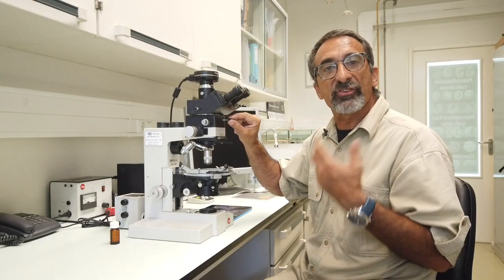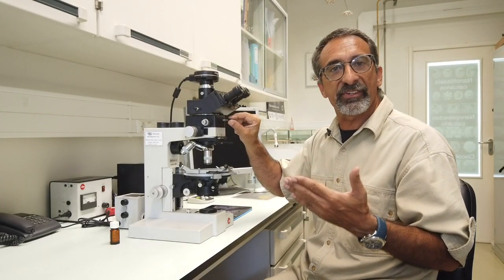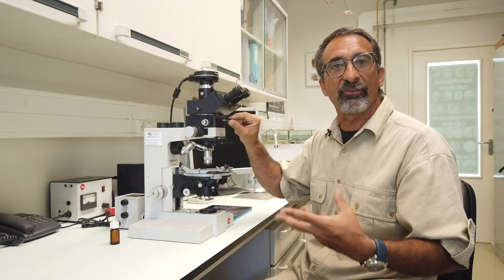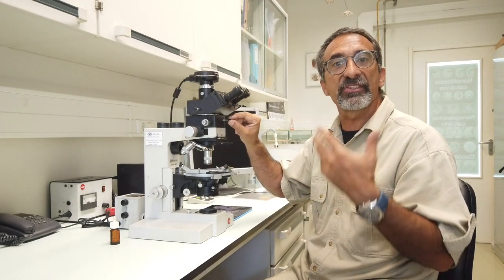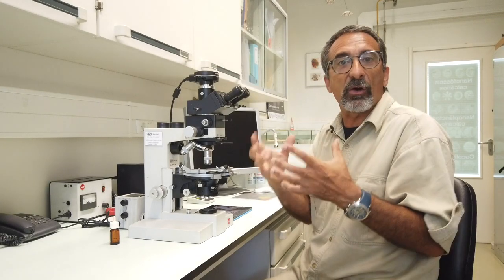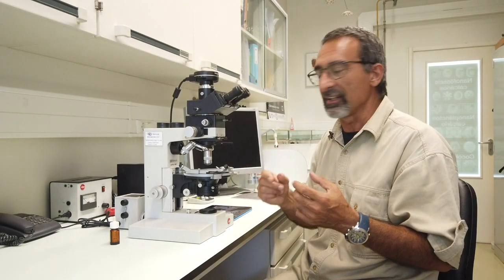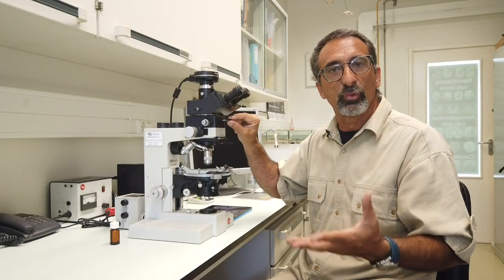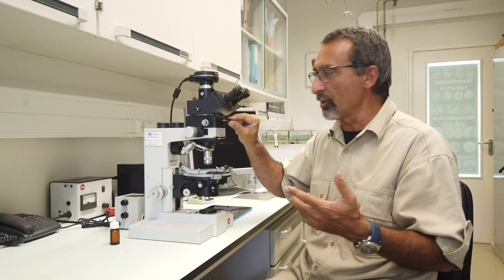Here we have an auxiliary lens, the Amici Bertrand lens, that normally we don't use with calcareous nanofossils, but in some cases is useful namely to determine the optical sign of the crystal. In our case we already know what it is. Calcite has a specific optical signal that we'll discuss later on. But this is also an important tool in a petrographic microscope.